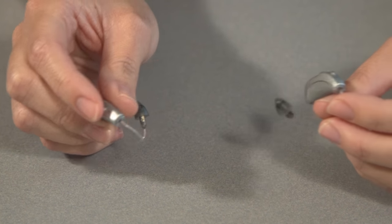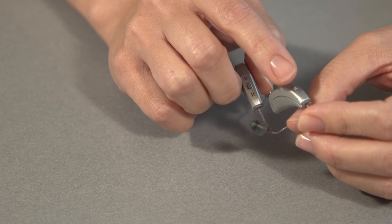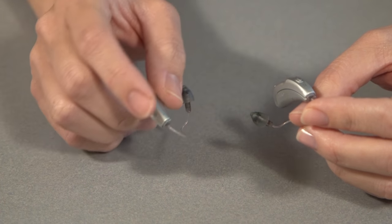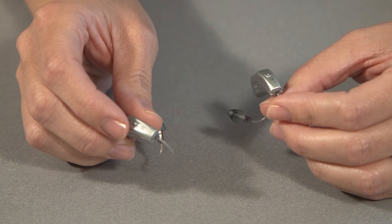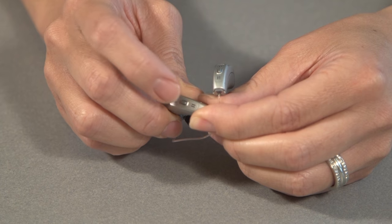If you push the button on the left hearing aid, it will decrease the volume on both sides. When you've successfully pressed the button, you'll hear an audible beep in the hearing aids and that's how you know you've made a change with the volume control.